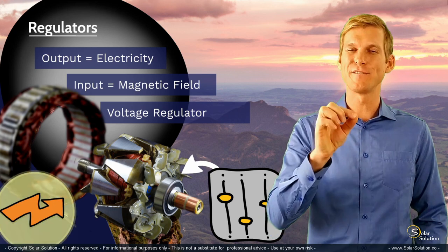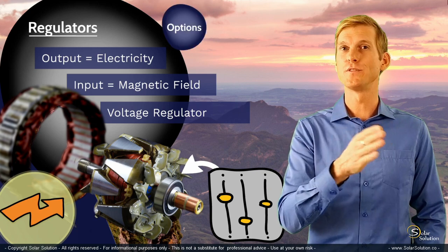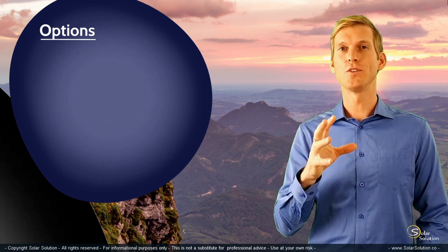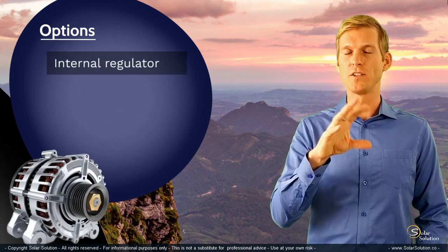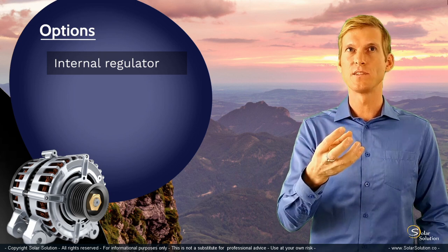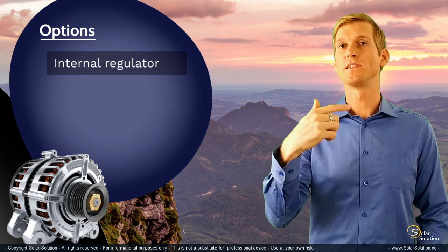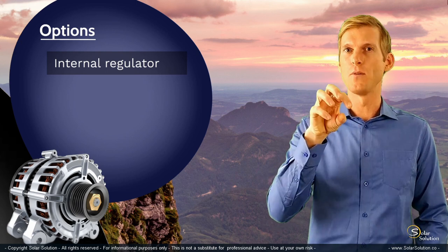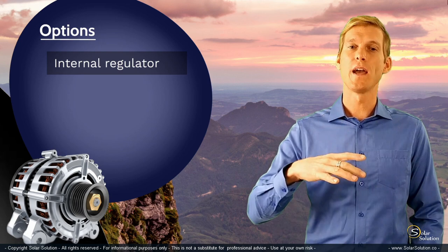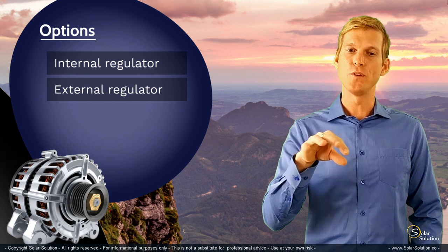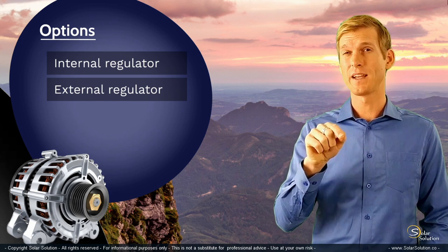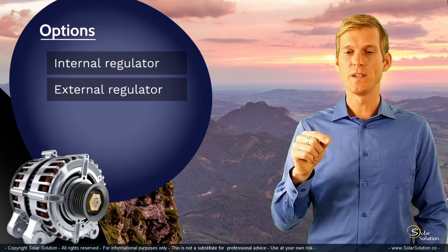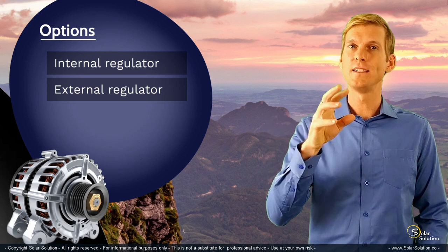Now let's have a look at the specific types of alternator regulators. There are basically two options. The first is the more conventional type: the internal regulator. You may or may not be able to see it on your alternator — most of the time it's at the back of the alternator, the opposite side of the pulley, and it looks like a small black plastic box mounted on the alternator. The second option is using an external regulator, whereby you disconnect the internal regulator and connect an external regulator directly to your alternator.